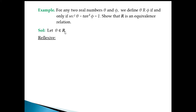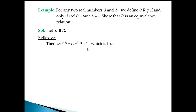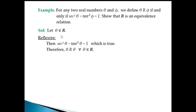For reflexivity, assume θ belongs to the real numbers. We take only one element, so we check: sec²θ minus tan²θ. From trigonometry, we know the identity sec²θ minus tan²θ equals 1. This is a known formula, so it is true. Therefore θ is related to θ for all θ in R, meaning R is reflexive.